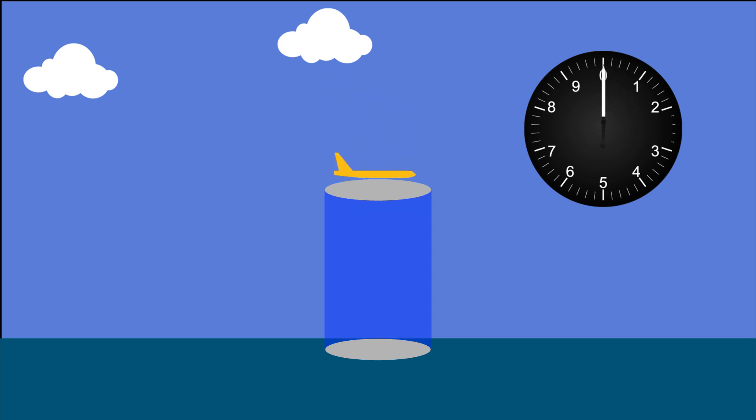Note that the reverse is also true. If you heat the column of air, it will expand and you will inadvertently climb to keep the altimeter needle in the same spot.